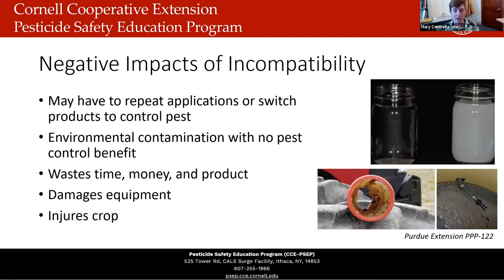Regardless of which type of incompatibility you have, there are really negative consequences. You might have to repeat applications to control your pest or even switch products if repeat application violates the label. If you applied, spilled, or have to dispose of the mixture, the resultant mixture can be considered an environmental contaminant because it didn't provide any benefit for pest control. Incompatibility wastes time, money, and product, and it can damage your equipment and injure your crop — for example, with phytotoxicity.